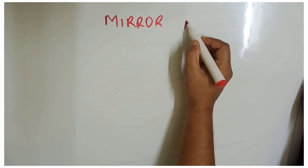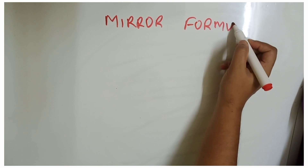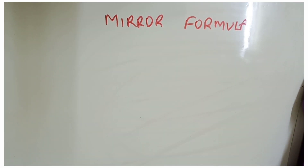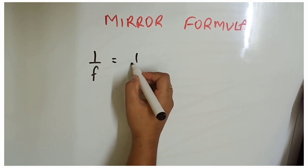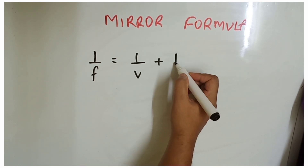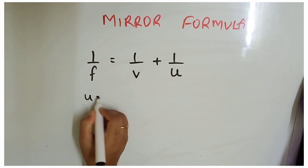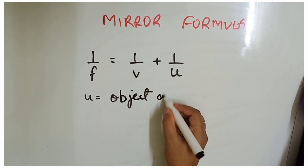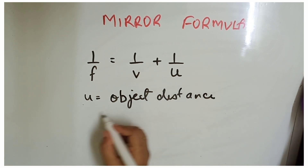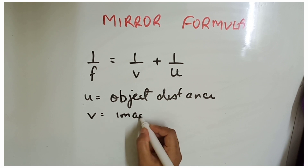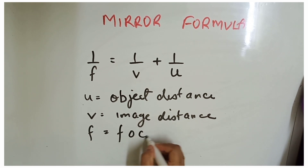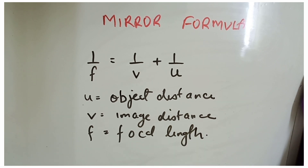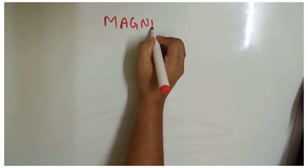Now we will discuss one very important formula: the mirror formula. Derivation you will study in 12th standard, but this formula is very important for solving questions. It relates focal length, distance of image, and distance of object: 1/f = 1/v + 1/u. Here f is focal length, u is object's distance from the mirror measured from the pole along the principal axis, and v is image's distance from the mirror.